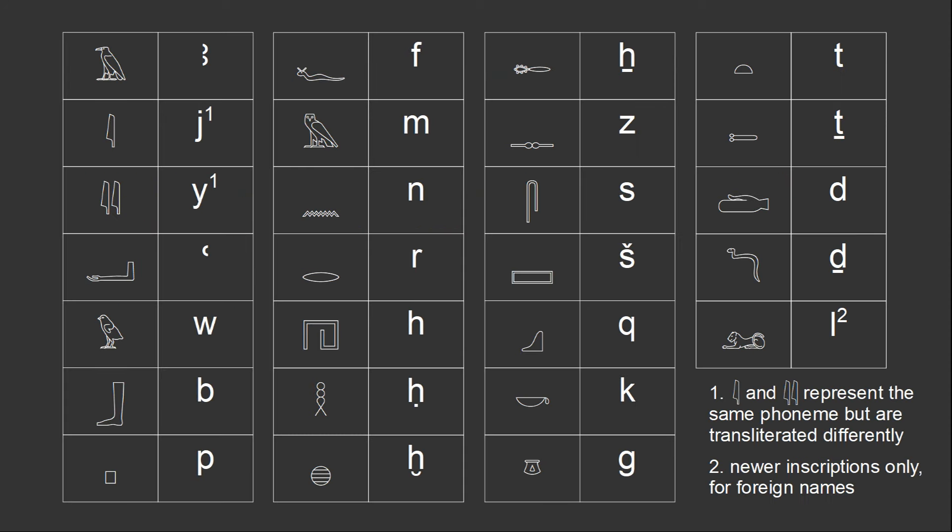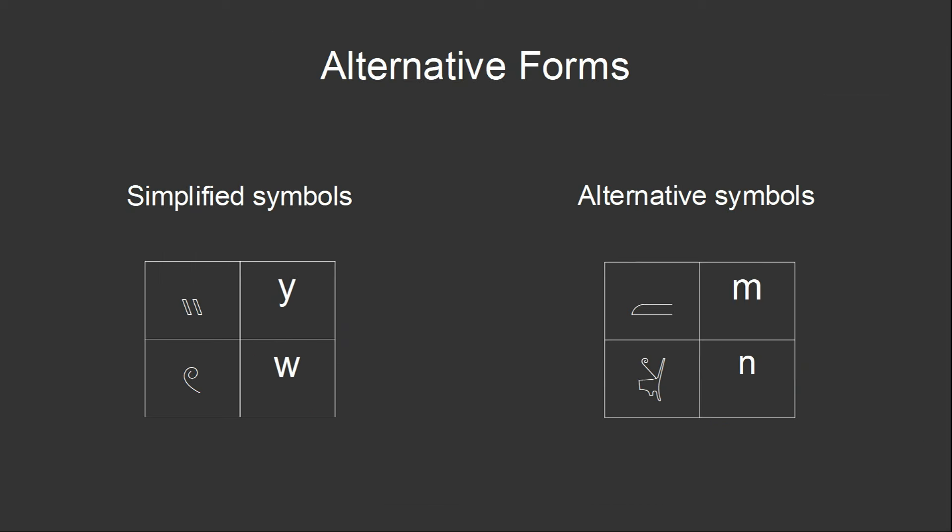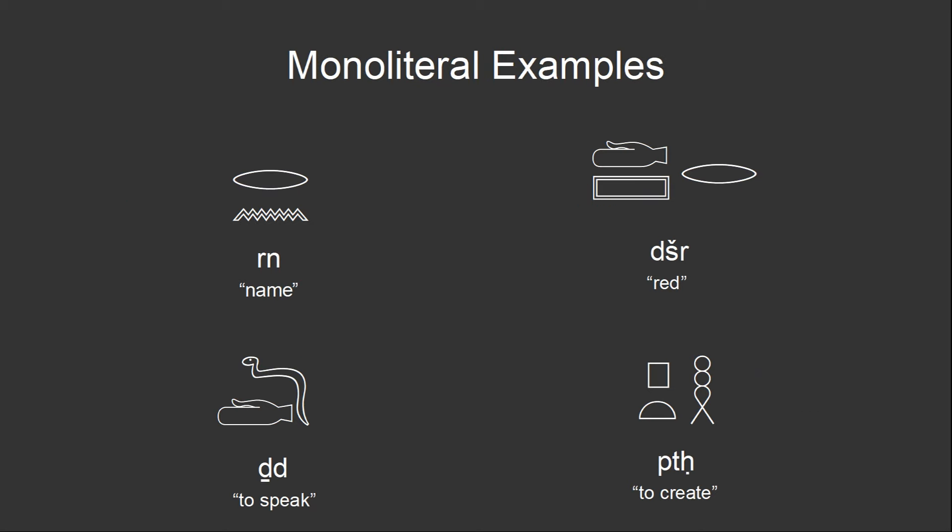There are 26 monoliteral characters, representing the 24 different consonant phonemes of Egyptian, plus one phoneme that only appears in foreign names. The characters transcribed as J and Y both represent the same sound. There are abbreviated forms of the Y and W symbols, which are commonly used in many words, as they're simpler to write than the full versions. There are also alternative symbols, representing the same sounds as M and N. These are relatively rare. Words written in monoliterals are pretty simple to read, and generally don't cause too much trouble. With these symbols, it would be possible to write any word in the Egyptian language. In practice, though,